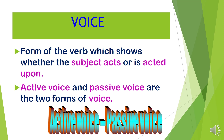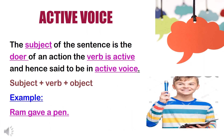Voice is divided into two types: active voice and passive voice. When the subject of the sentence is the doer of an action, the verb is active and hence said to be in active voice. The general formula in active voice is subject plus verb plus object.